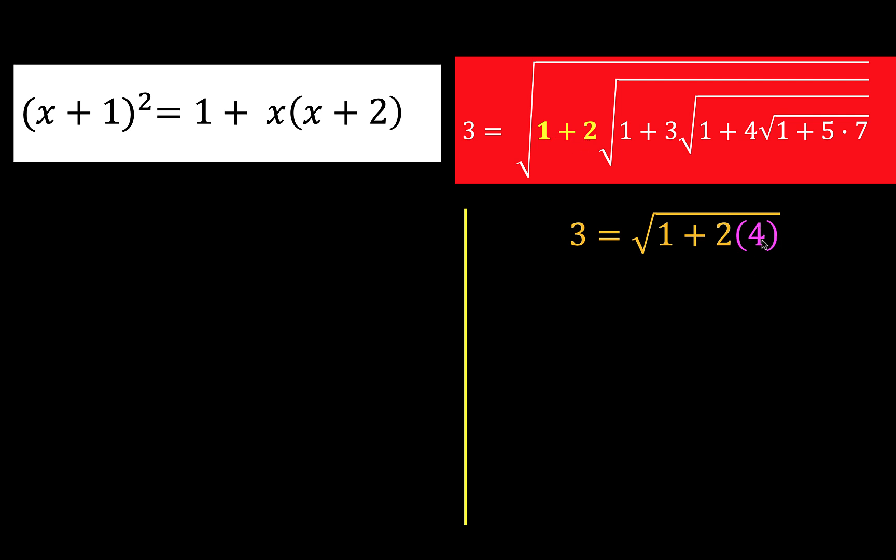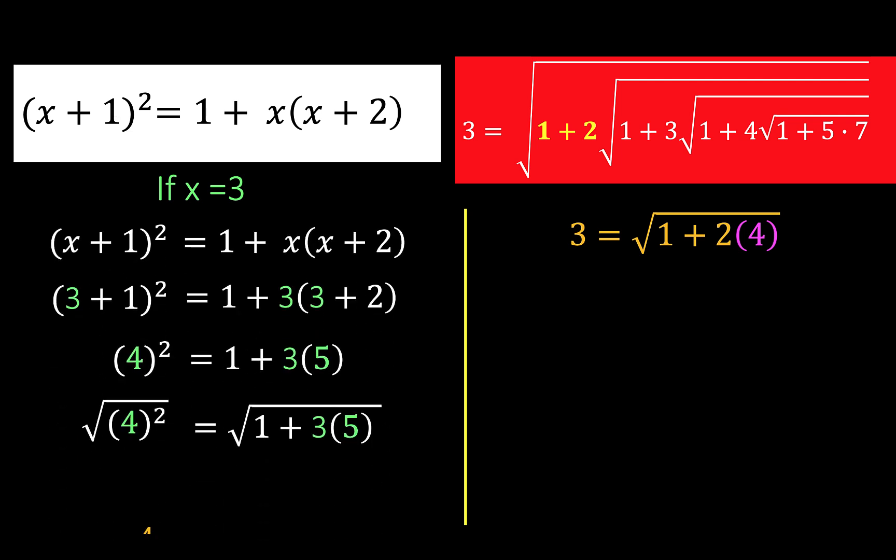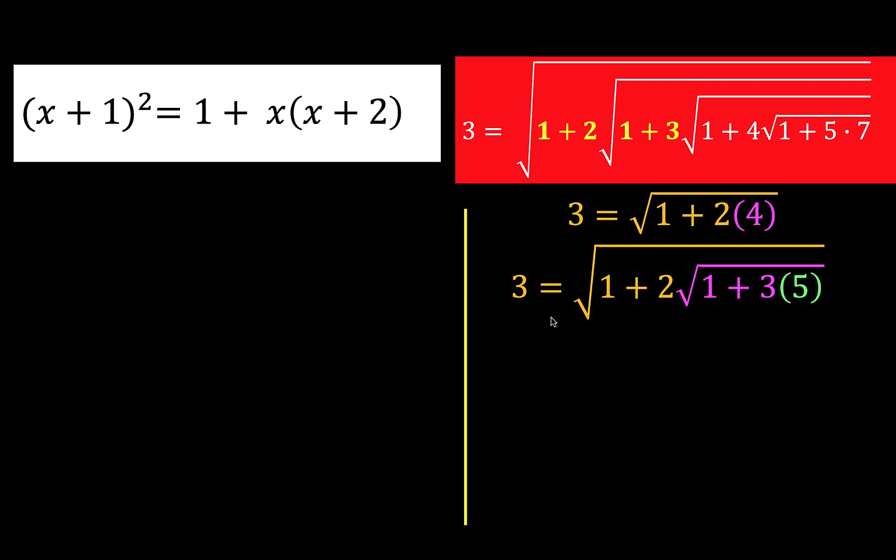Then let's take care of this 4. Let's substitute x equals 3 to this binomial. And similar to what we did in the first example, we simplify, and we arrive at 4 equals square root of 1 plus 3 times 5. We are now going to replace this purple 4 by this radical expression. And notice now that comparing our original nested radicals, we already have the 1, the 2, the 1, and the 3.